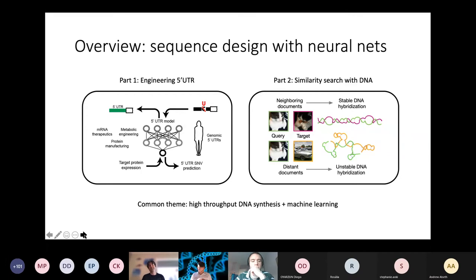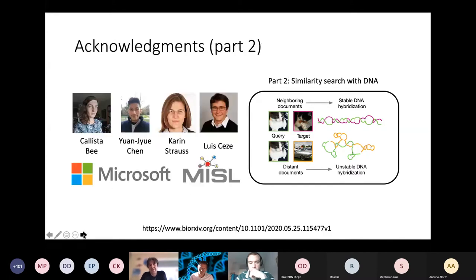That was sort of the end of this first vignette on designing sequences for synthetic biology. Now I want to switch gears and move to a totally different topic that is connected to the first one simply by the fact that we're using high throughput libraries of synthetic oligos and machine learning. In this case, I want to talk about similarity search in DNA. Before that, again, I want to acknowledge the people who actually did this work: Callie B, who's the lead computational scientist, Yuan Chen, who did the experimental work, and then Karin and Luis, who are leading this large DNA data storage project jointly between Microsoft and the University of Washington.